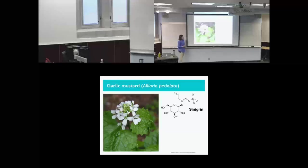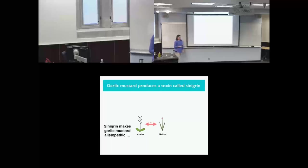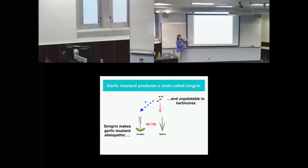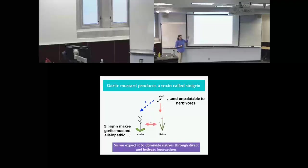Sinigrin makes garlic mustard unpalatable and can also make it allelopathic — when plants release compounds into the soil harmful to other species. We see allelopathic effects of garlic mustard on native species, generally mediated by the fungal community, but it can also have a direct phytotoxic effect. We also see that unpalatability give it an enemy escape interaction, where native herbivores preferentially consume native species and avoid garlic mustard. So if we're looking at these two trophic levels, we really expect garlic mustard to be a highly dominant species, hammering natives through allelopathy and enemy escape.